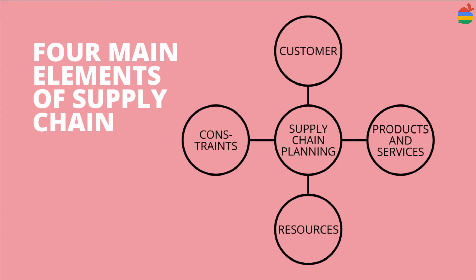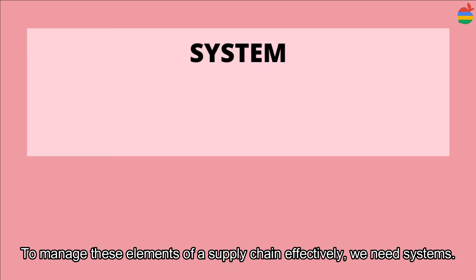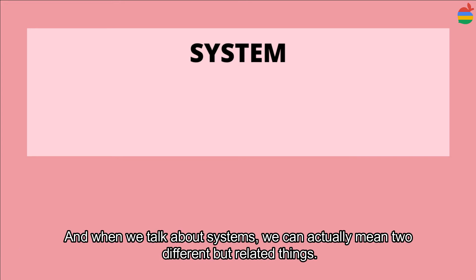The fourth element is your constraints. What are the deadlines you need to meet, and what capacity limitations do you have? To manage these elements of a supply chain effectively, we need a system.